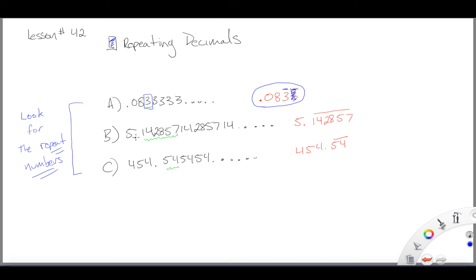For this one, you'll note that 5.142857, and then it repeats again 1, 4, 2, 8, 5, 7, and then it would do it again 1, 4, 2, 8, 5, 7 if we let it.